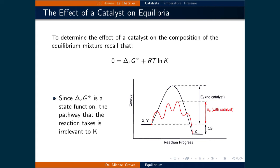If we look at this in the context of the Gibbs free energy, recall that the standard Gibbs free energy of the reaction plus RT times ln K is equal to zero. Since the standard Gibbs free energy of the reaction is a state function, the pathway that the reaction takes is irrelevant to K. The change in Gibbs free energy is the same for both pathways, therefore adding a catalyst does not affect the equilibrium concentrations.